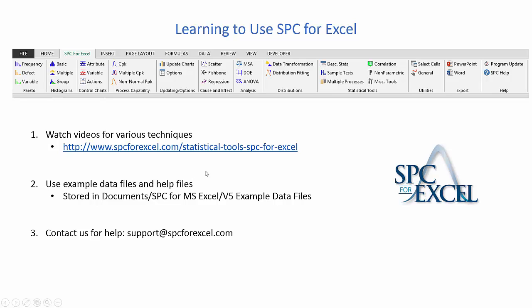If you'd rather learn by doing, we have some example data files you can use along with the help files. These example data files are stored under Documents > SPC for MS Excel, in a folder called 'v5 example data files.' There you'll find workbooks containing information for attributes data, variables data, Pareto, or histogram. You can use those to help learn the SPC for Excel software, because these data files follow right along with the SPC help, which gives you step-by-step instructions for constructing each technique.